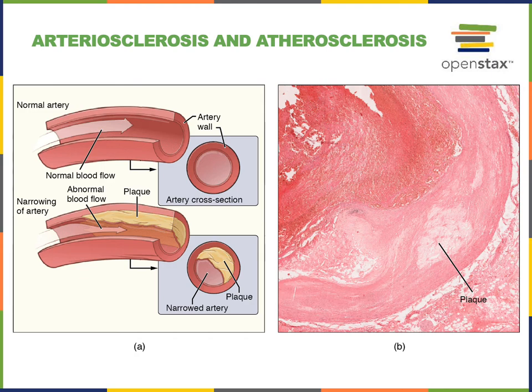Another risk factor that can damage the endothelium is hypertension and elevated blood pressure. As the endothelium becomes damaged, this is followed by inflammation. Inflammation involves activation of leukocytes that come to the damaged endothelium and move into the wall of the blood vessel. These leukocytes then perform phagocytosis to engulf lipids, and as they become filled with lipids, they become trapped in the wall of the blood vessel, contributing to the growth of the plaque.